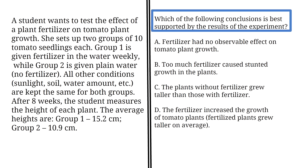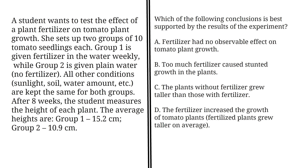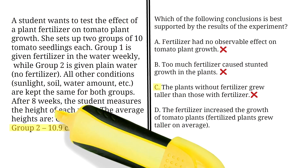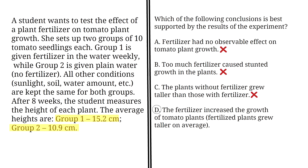Using the same passage, which of the following conclusions is best supported by the results of the experiment? A: Fertilizer had no observable effect on tomato plant growth — this is incorrect. The plants in Group 1 which received fertilizer grew to an average height of 15.2 cm, taller than the plants in Group 2 which only reached 10.9 cm without fertilizer, so fertilizer had an observable effect. B: Too much fertilizer caused stunted growth — this is incorrect; there is no evidence from the passage that backs this claim. C: The plants without fertilizer grew taller — this is also incorrect, as plants without fertilizer in Group 2 were shorter. So the correct answer is D: The fertilizer increased the growth of tomato plants, because the fertilized plants grew taller on average.